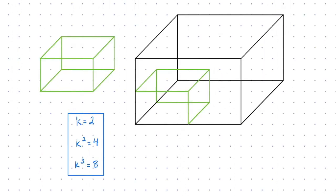This is my rectangular prism on isometric dot paper, just so you can see what's happening. We know we have a linear scale factor of 2, so all of my original dimensions have been doubled to get my new figure. In terms of the surface area, if we take a look at this face, we can see that we're now going to fit one, two, three, and then four faces into that new shape.